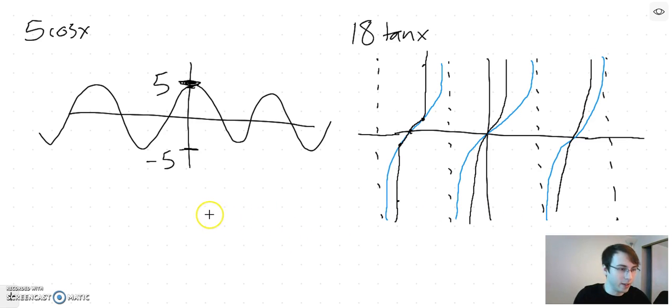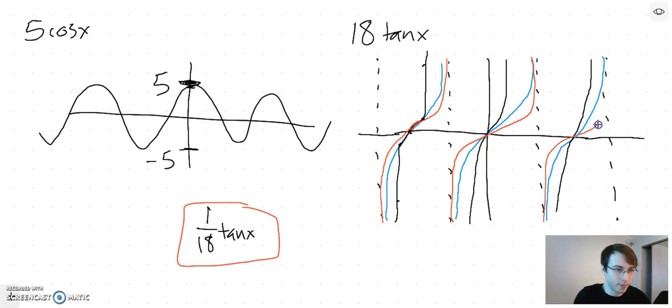And if you did like 1/18 tan(x), let's put that in red, 1/18 tan(x), then that would become a lot less steep, so it would be going more like this. So the amplitude for tangent just kind of controls how steep or flat it's getting.